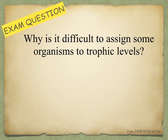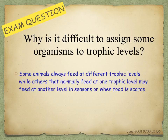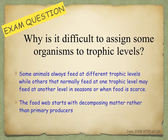Exam question: Why is it difficult to assign some organisms to trophic levels? Some animals always feed at different trophic levels, while others that normally feed at one trophic level may feed at another in different seasons or when food is scarce. Also, the food web could start with decomposing matter rather than primary producers.